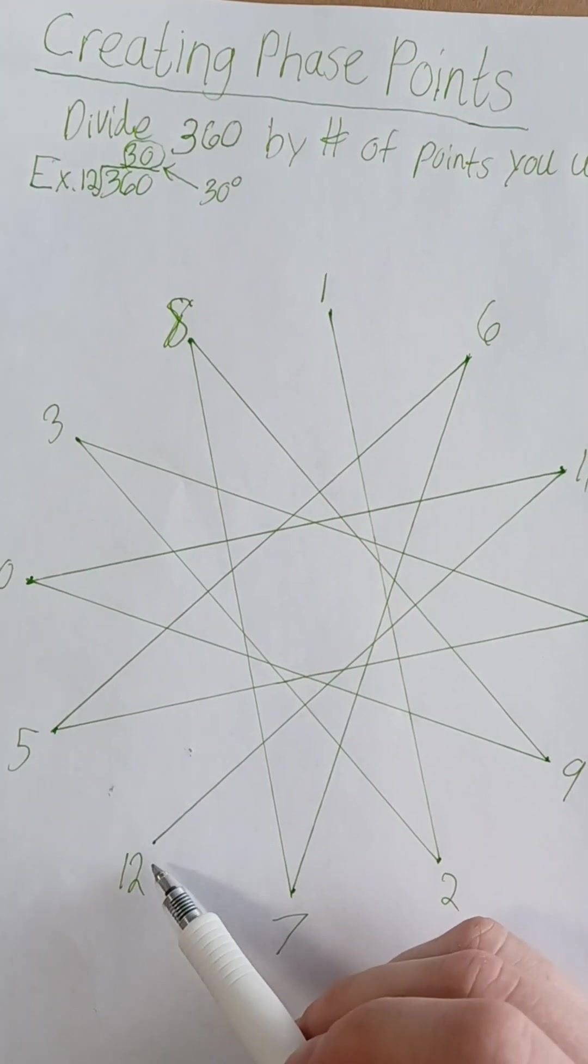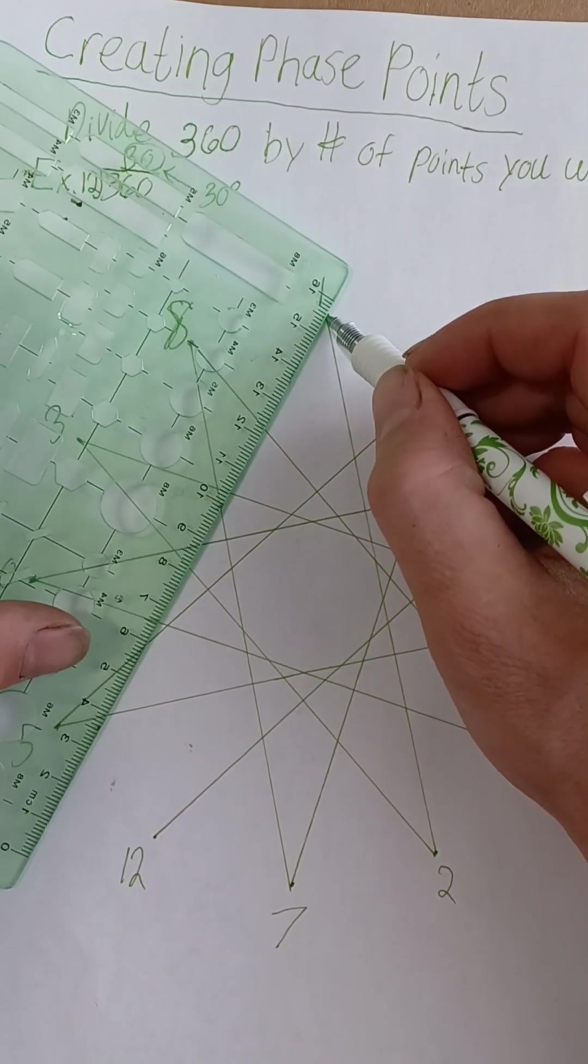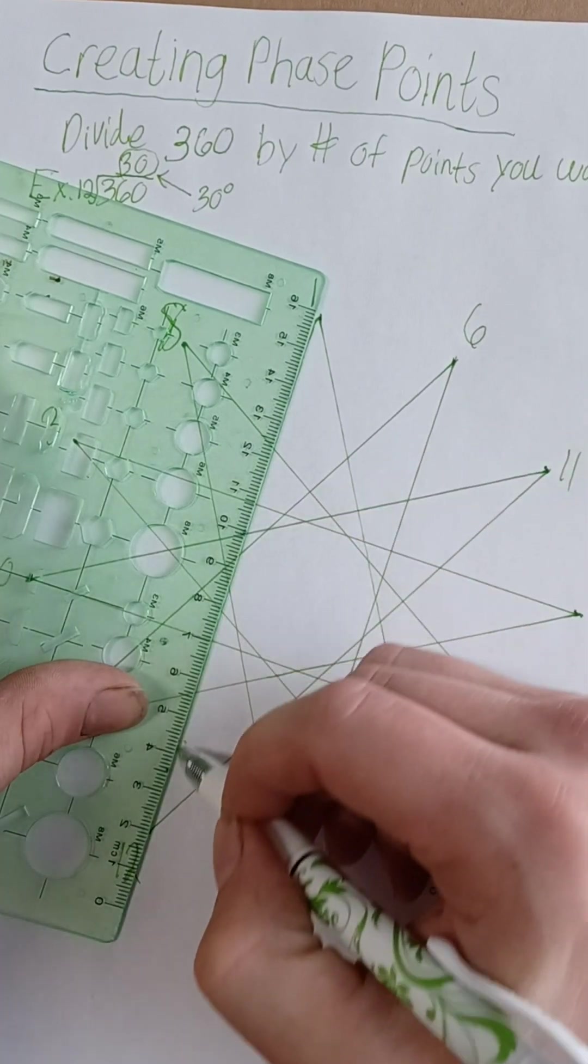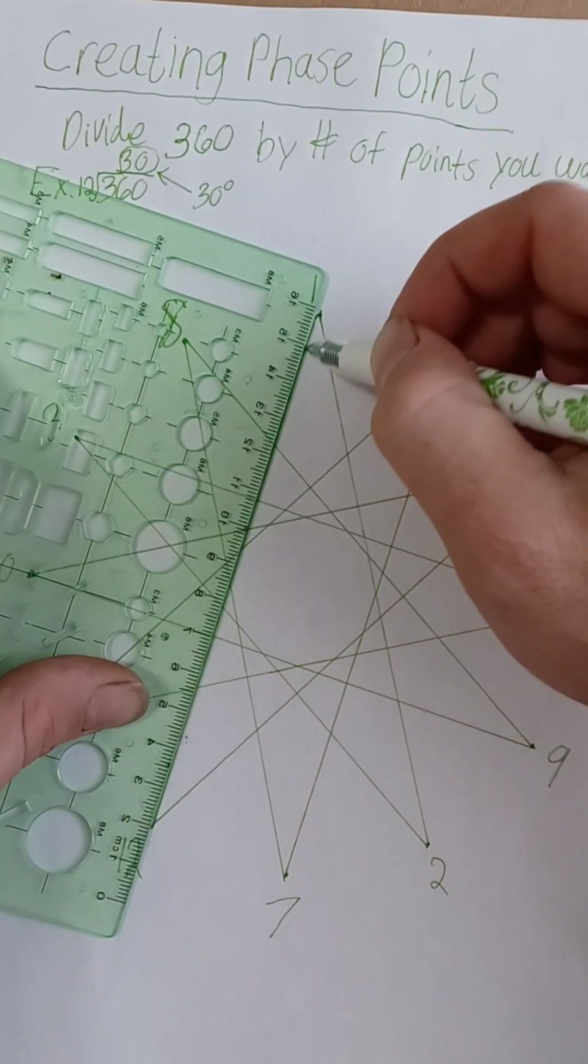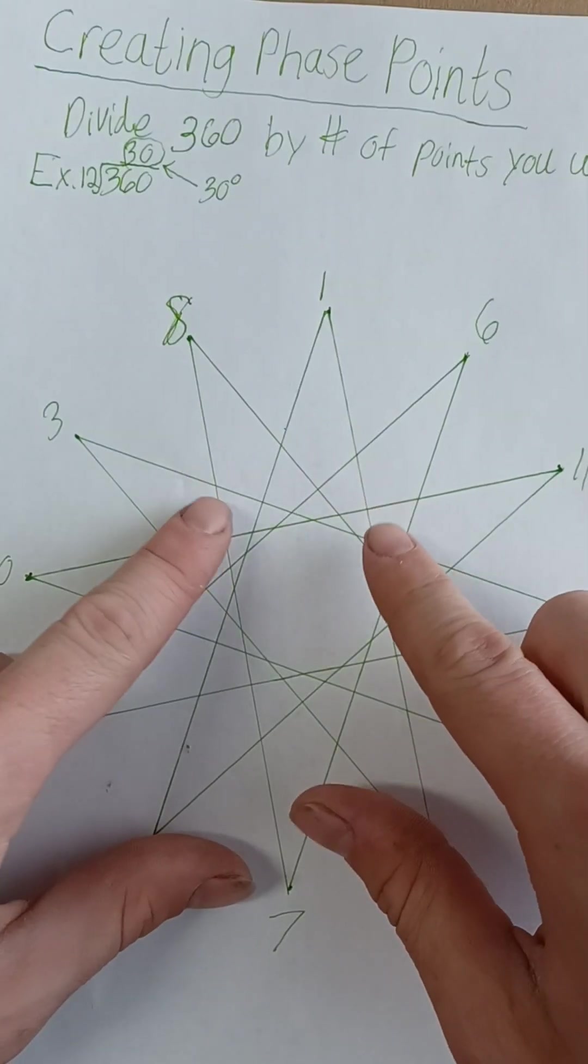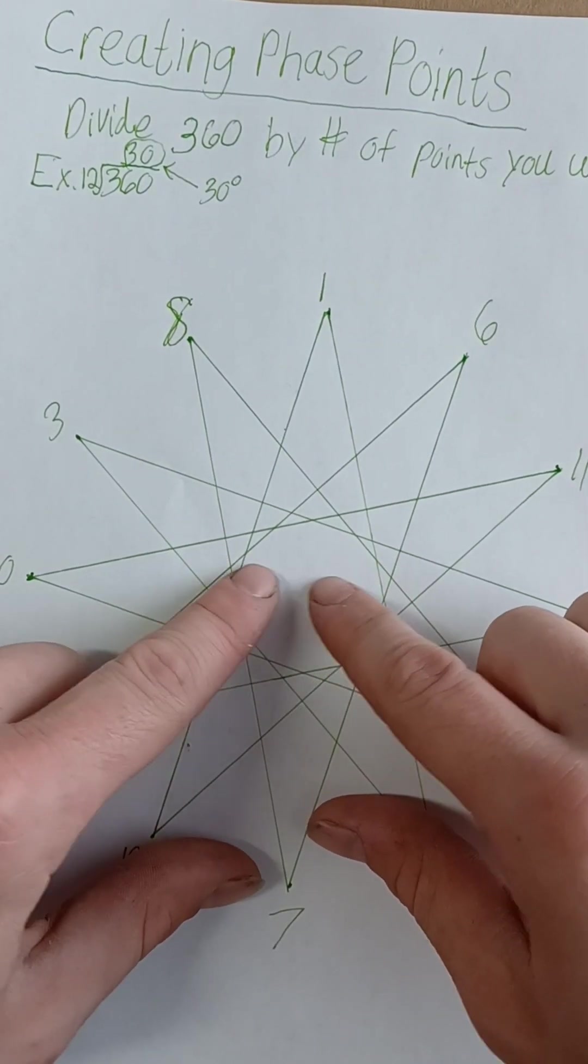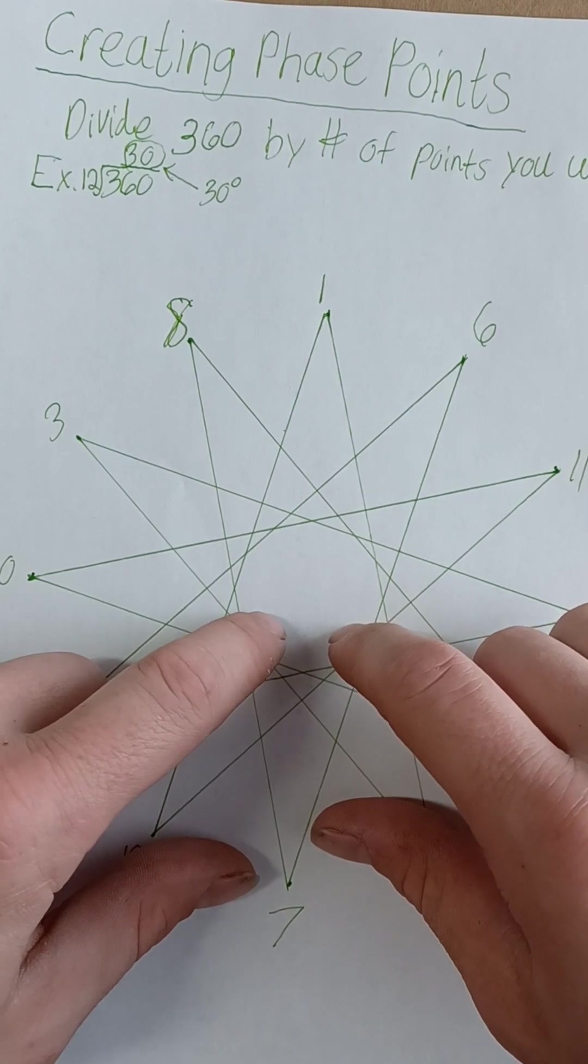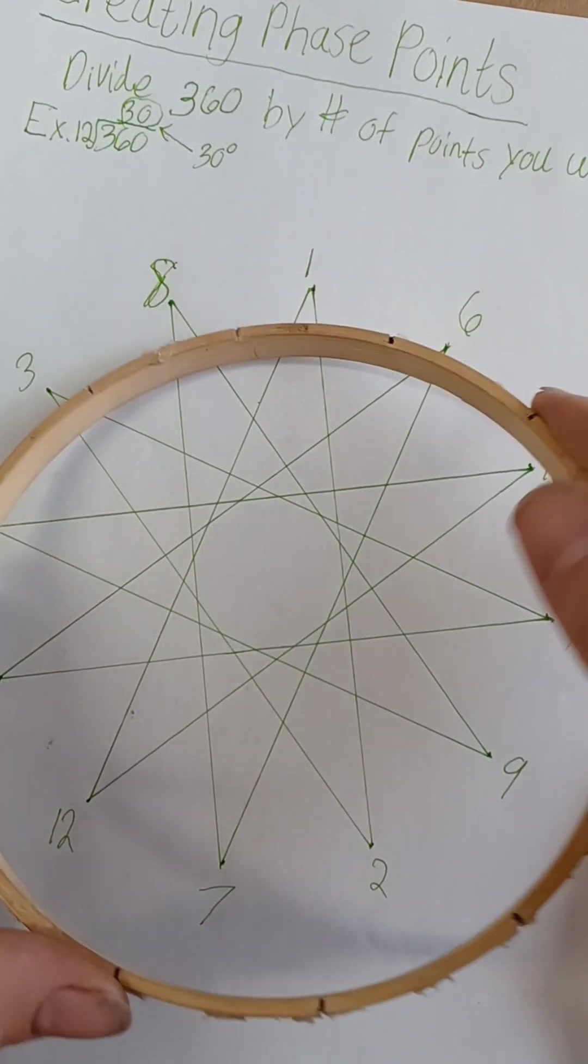Now once you get to 12, you're starting right from the beginning all over again, creating your perfect and complete 360 degree star. Now this can concentrate the energy right here at the center. Magnetic energy that is.